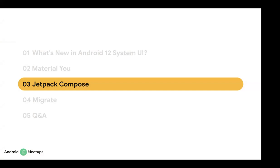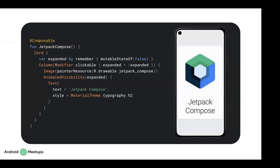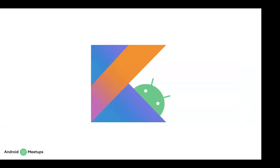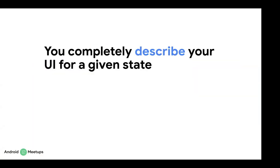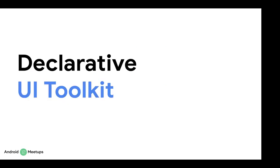Let's move to the Jetpack Compose section. For those who don't know what Jetpack Compose is, it is the new Android UI toolkit created to help developers build better applications faster. Compose is built on top of the Kotlin language and uses modern architecture and powerful Kotlin APIs. It is a declarative UI toolkit, which means we completely describe what our UI should look like for a given state, and then the framework takes care of updating the UI when that state changes.